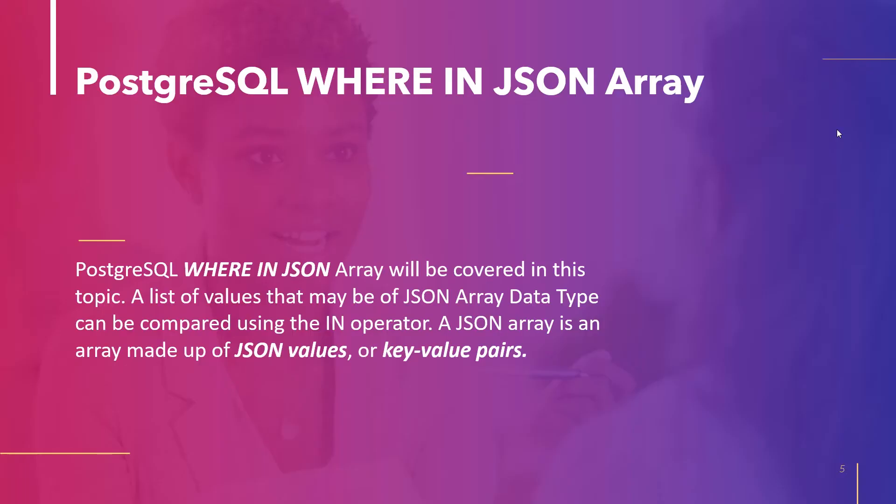The next topic is PostgreSQL WHERE IN JSON Array. The IN operator can be used to check against a list of values that can be of a JSON array data type. JSON array data type is an array consisting of JSON values like key-value pairs. We will take an example and understand how to filter data with the IN operator using a JSON array.